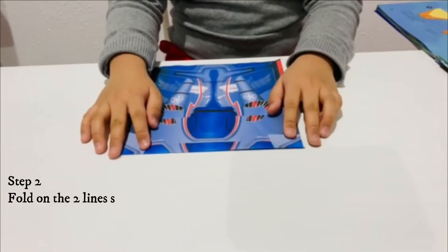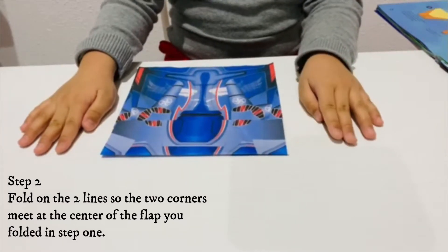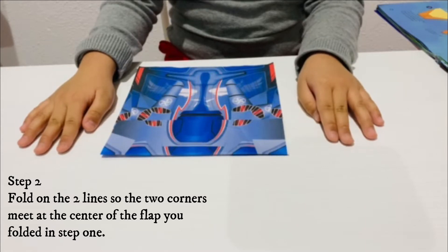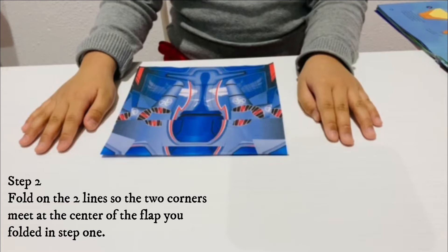Step 2: Fold on the two lines so the two corners meet at the center of the flap you folded in.